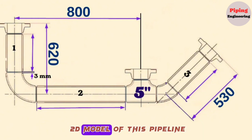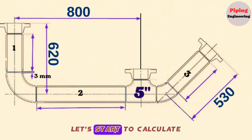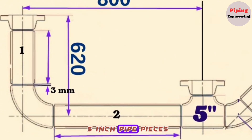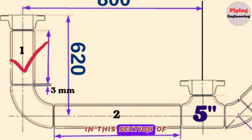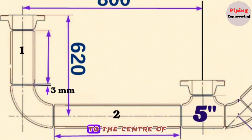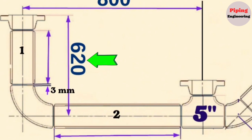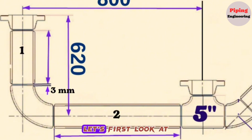We will use the 2D model of this pipeline to make your calculation easier to understand. Let's start to calculate the length of the 5-inch pipe piece Item 1 used in the fabrication of this pipeline. In this section of the pipeline, the total distance from the face of the weld neck flange to the center of the 90-degree butt welded elbow is 620 mm. To find the length of pipe piece Item 1, subtract the length of the weld neck flange and 90-degree butt weld elbow from the total length.